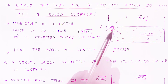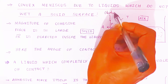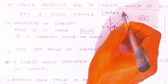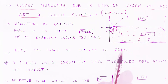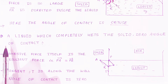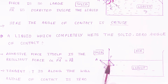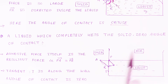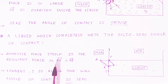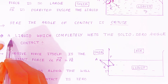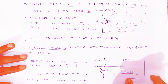For the convex meniscus, the angle of contact is more than 90 degrees — it forms an obtuse angle. The third type is when the liquid completely wets the solid surface: the angle of contact is zero. Here PR is along both the solid surface and liquid surface, and the adhesive force PA equals the resultant PR. The tangent is along the wall and the angle of contact is zero.